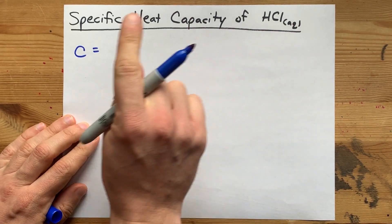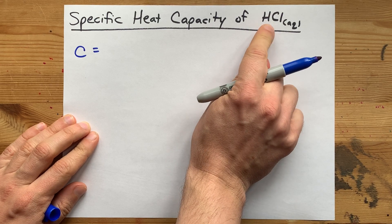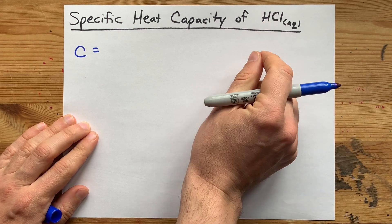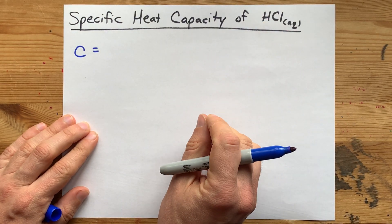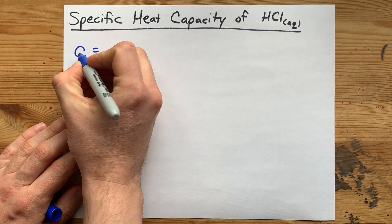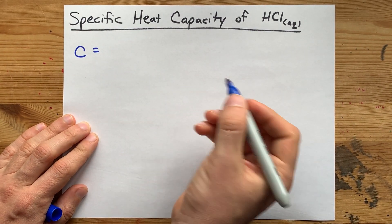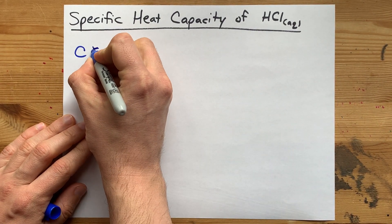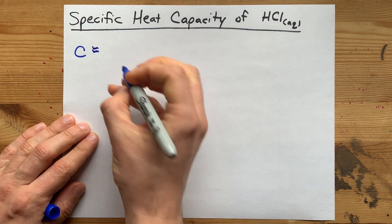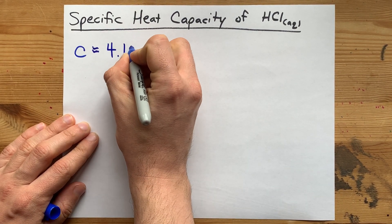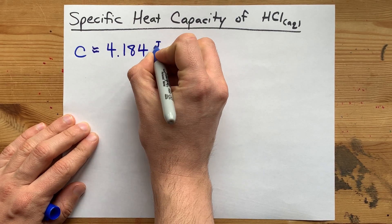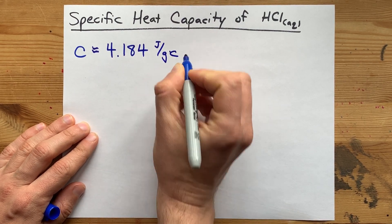What that means is that you actually used mostly water that happened to have some hydrochloric acid in it. The heat capacity that your teacher probably wants you to use is approximately the heat capacity of pure water. Most people say that that is 4.184 joules per gram degree Celsius.